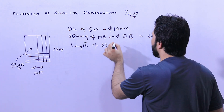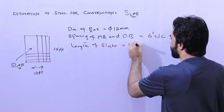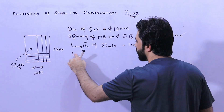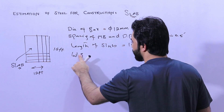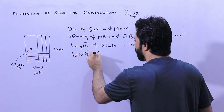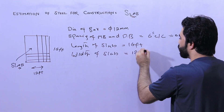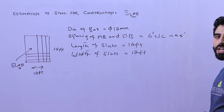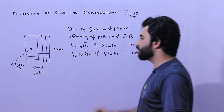You should also know about the length of the slab. Suppose here the length is 16 feet. And you should know about the width of the slab, which is here 12 feet. Now let's calculate steel reinforcement for main bars and distribution bars.